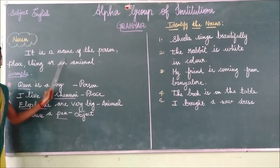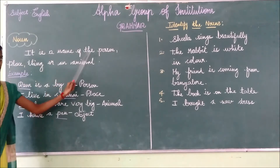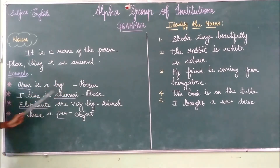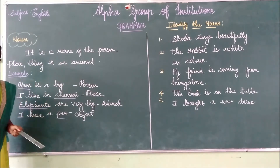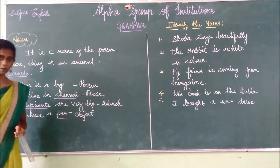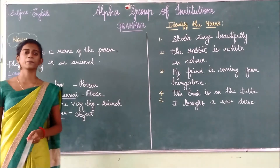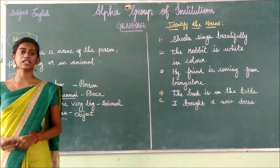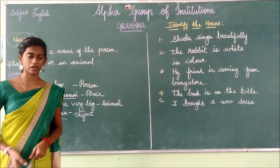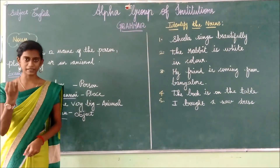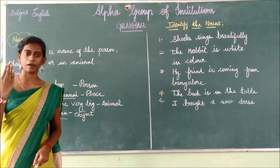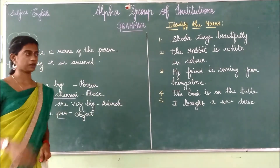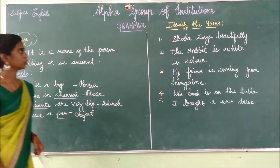Shall we read the definition once again? It is a name of a person, place, thing or an animal. Noun is nothing but it is the name of a person, place, thing or an animal.